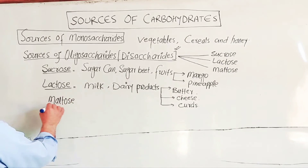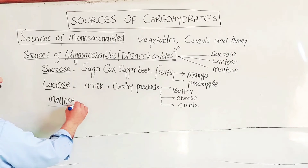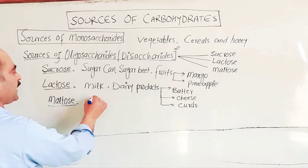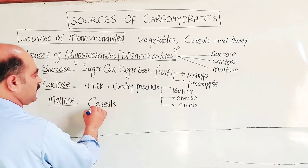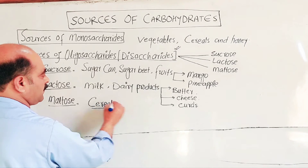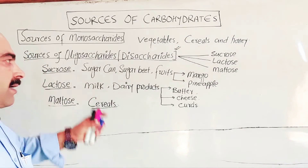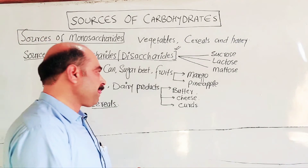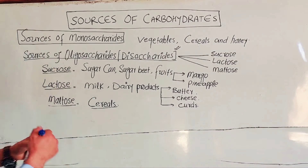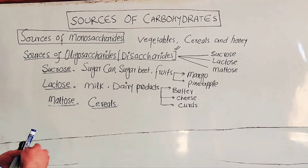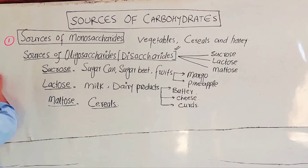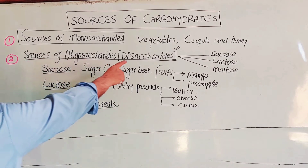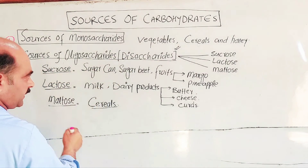Maltose is also called malt sugar. The main sources of maltose are cereals. So to summarize: the first category is sources of monosaccharides, the second is sources of oligosaccharides, especially disaccharides.